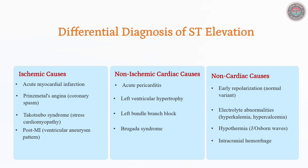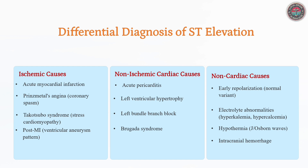Several non-ischemic conditions can produce ST elevation, requiring careful differentiation from acute MI. Pericarditis presents with diffuse ST elevation and PR depression, while LVH and LBBB can distort ST segments. Brugada syndrome causes coved ST elevation in V1 to V3 and is associated with ventricular arrhythmias. Electrolyte imbalances, hypothermia, and CNS events can also alter ECG patterns, necessitating comprehensive evaluation.